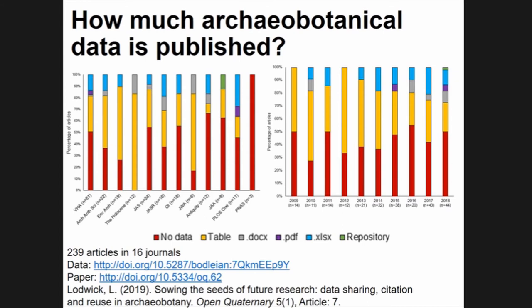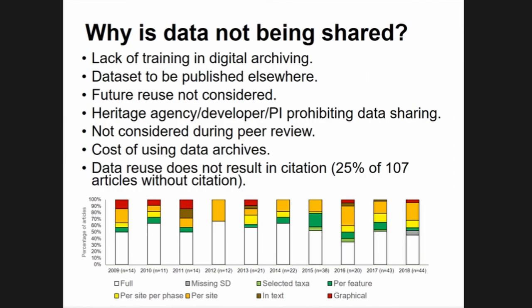The results show that the red bars — articles with no data available — represent the highest category across many journals. In Vegetation History and Archaeobotany, our subdisciplinary main journal, 50% of articles do not have data available. PMAS had only three articles and none had raw data, which is remarkable, and PLOS ONE was also surprising. There are lots of articles being published as the main reports of assemblages, claiming new research findings, but not providing data. Only one article out of 239 had put its data in a repository.